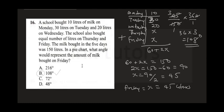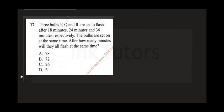Question 17 says: three bulbs P, Q, and R are set to flash after 18 minutes, 24 minutes, and 36 minutes respectively. The bulbs are switched on at the same time. After how many minutes will they all flash at the same time? Anytime you meet a question like this, just find the LCM.